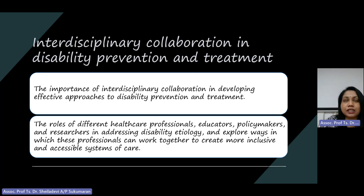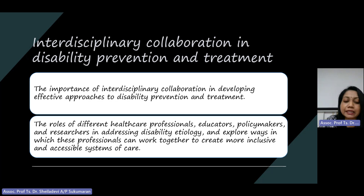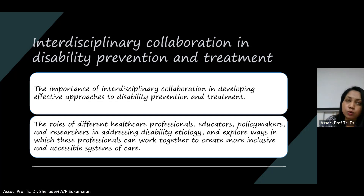There are several types of genetic mutations that can cause disabilities. First, point mutations are changes that happen in a single nucleotide base pair of DNA. Second, frameshift mutations occur when nucleotides are inserted or deleted in numbers other than multiples of three, causing alteration of the reading frame and DNA sequence, resulting in a shift of the genetic code.